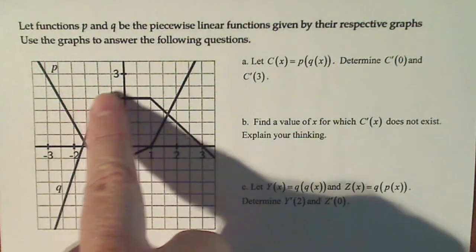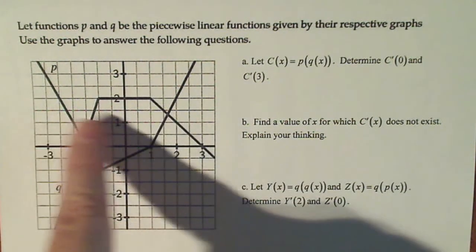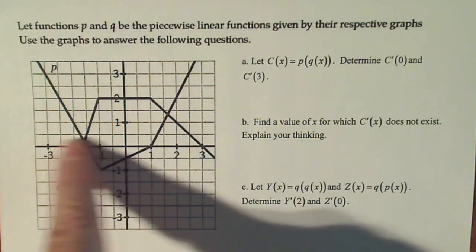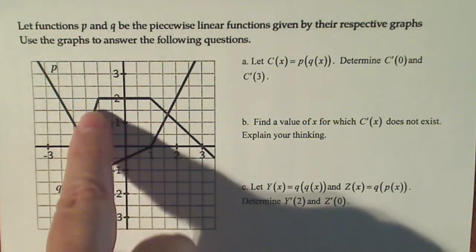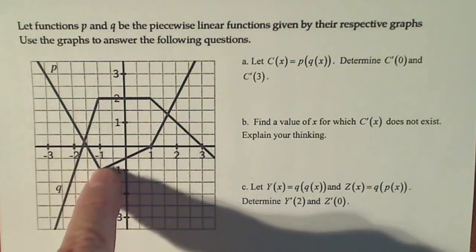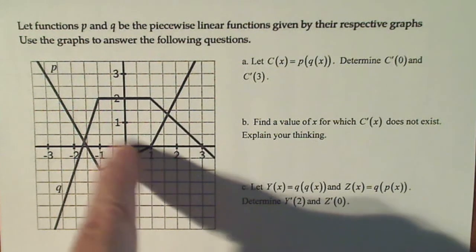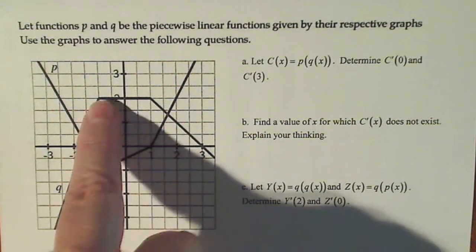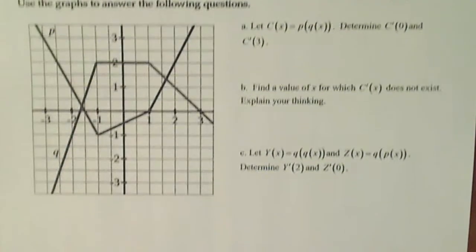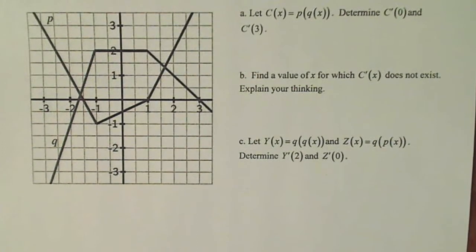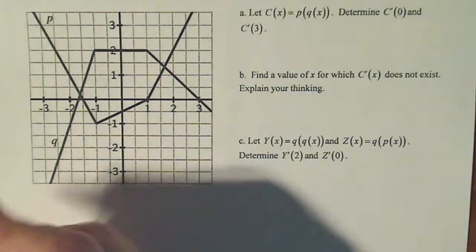The first thing I did was divide up the x-axis into intervals where the corners meet. The corners are at negative one and positive one, and that's where the derivatives change because everything is linear here. So I created a little chart, one for p prime and one for q prime.